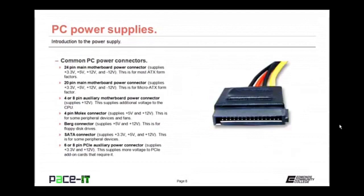Then there's the SATA connector, which supplies 3.3, 5, and 12 volts to SATA devices using a 15-pin plug. And finally, you may have a 6 or 8-pin PCI auxiliary power connector, which supplies additional 3.3 and 12 volts to some PCI add-on cards — specifically those that require it, commonly video graphics cards.